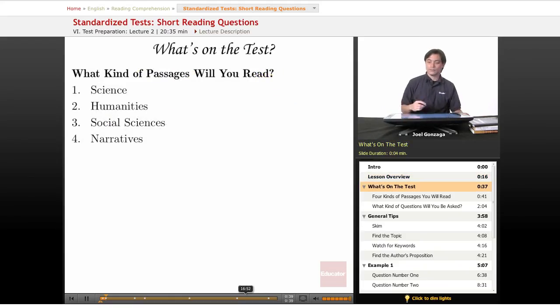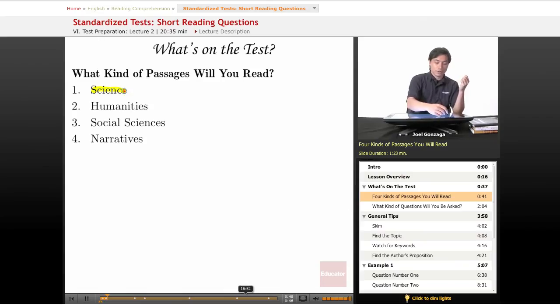What kind of passages will you read? Well, there are basically four that test makers will choose from. They'll give you all kinds of science ones, and these are typically the hard sciences like physics, chemistry, astronomy. And they tend to not emphasize psychology or sociology or more soft sciences, as they're called.